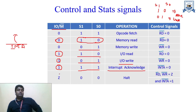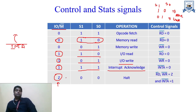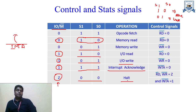When IO/M complement value is Z (tri-state), that means the buses are in tri-state, or the microprocessor is in a very high impedance state. This occurs when the microprocessor is reset. When IO/M complement is in tri-state and S1 and S0 is equal to 0, 0 — that is the halt condition, meaning stop the operations. That is the meaning of halt — the program execution has been completed and the microprocessor is reset.